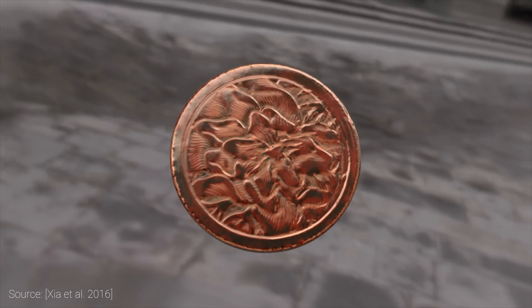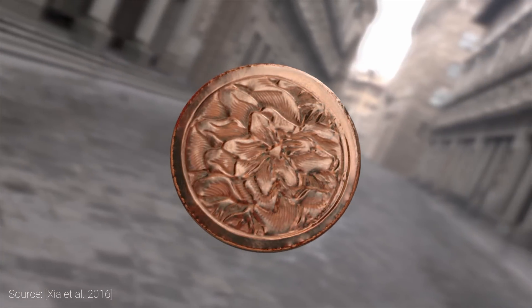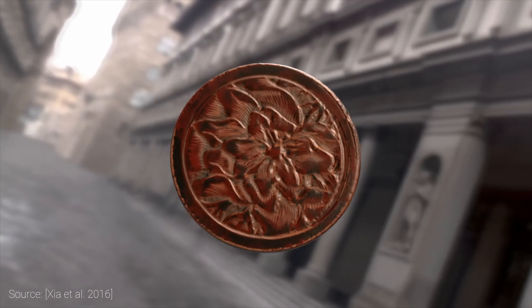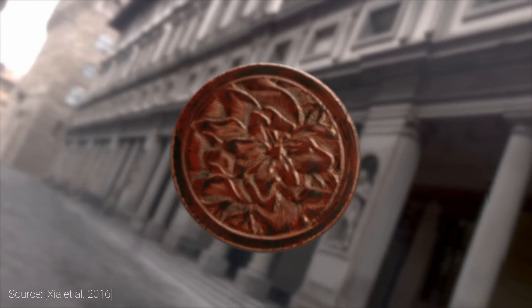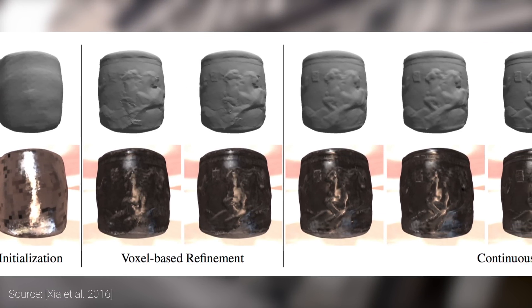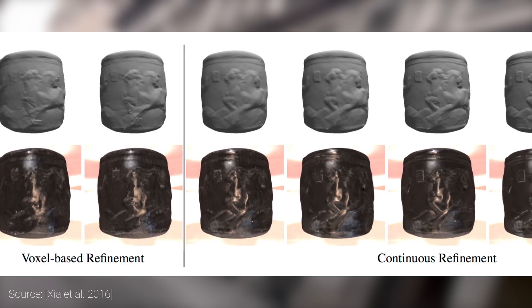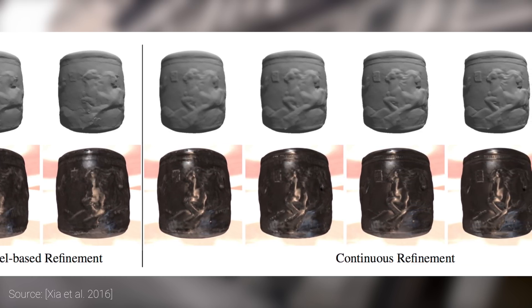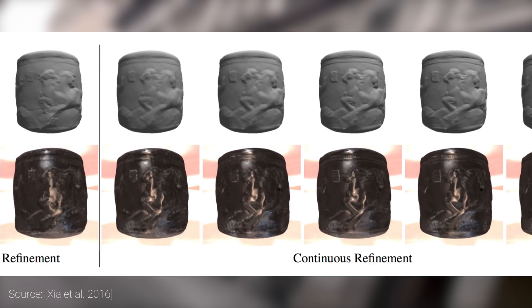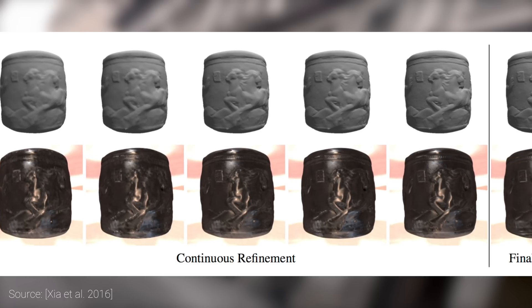However, now that we know the lighting a bit better, we can again get back to the surface reconstruction and improve our solution there. This entire process happens iteratively, which means that first we obtain a very rough initial guess for the surface, and we constantly refine it to get closer and closer to the final solution.